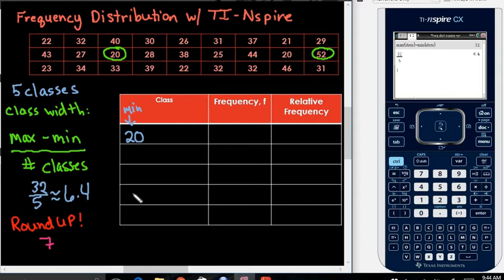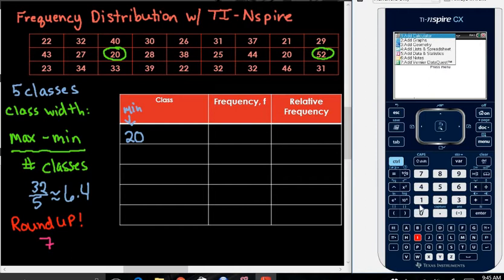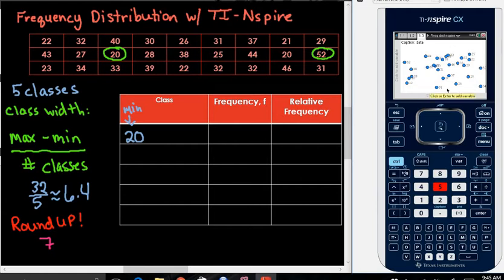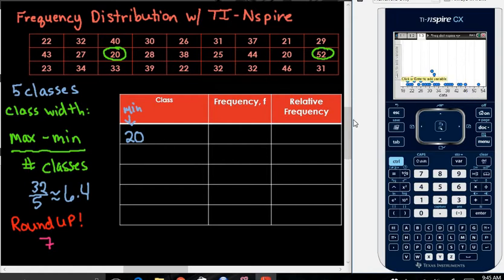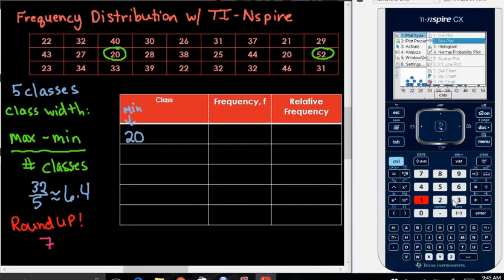We could go ahead and fill all of these in, but what I'm doing is trying to help you use the calculator. So I'm going to control I again, and this time I'm going to add a data and statistics screen. On the data and statistics screen, it always just randomly throws whatever points you have in the spreadsheet here. Then you would click at the bottom where it says click to add a variable, and I'm going to add the data variable set to it. It defaults to a dot plot. I do not want the dot plot, so I'm going to hit menu, choose plot type, and choose the histogram.